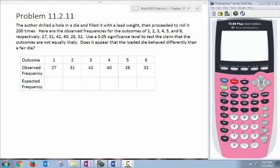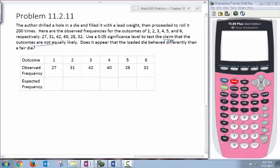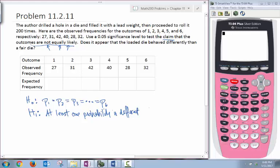I want to highlight that we are looking at the claim that the outcomes are not equally likely. We don't have a specific distribution, so we'll find our expected values using the idea that it could be equally likely. Let's set up our null and alternative hypotheses. The null hypothesis is that P1 equals P2 equals P3 through P6. The alternative hypothesis says that at least one probability is different, and this is our claim.